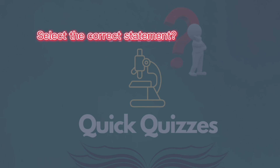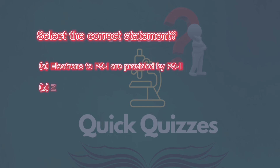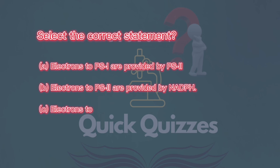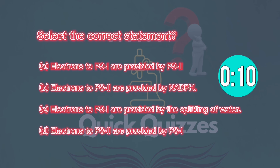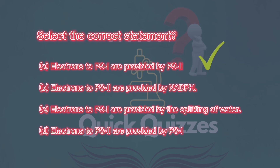Select the correct statement: A) electrons to PS1 are provided by PS2, B) electrons to PS2 are provided by NADPH, C) electrons to PS1 are provided by the splitting of water, D) electrons to PS2 are provided by PS1. Answer: A, electrons to PS1 are provided by PS2.